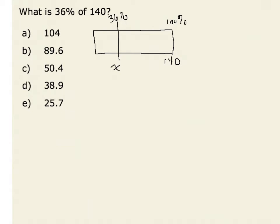Therefore, we can now set up a proportion of 36 over 100 is equivalent to x over 140.